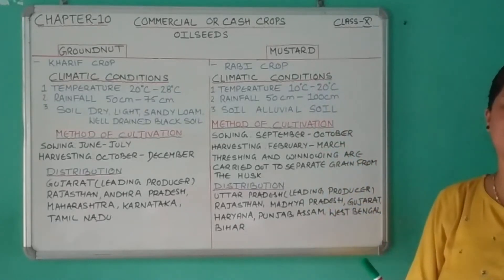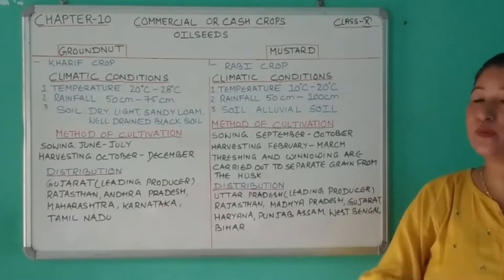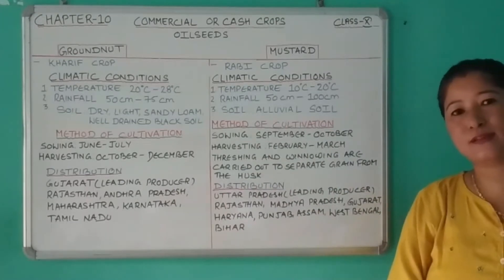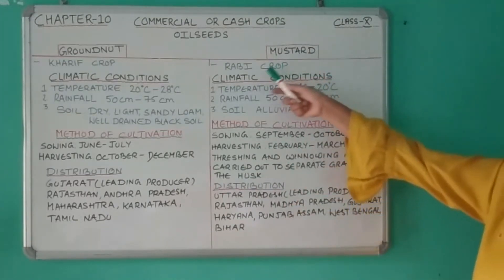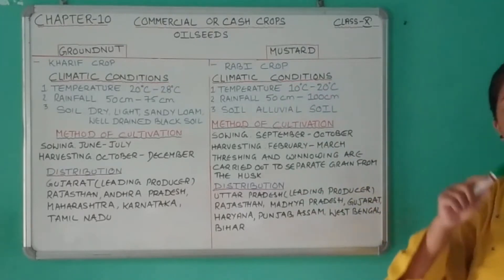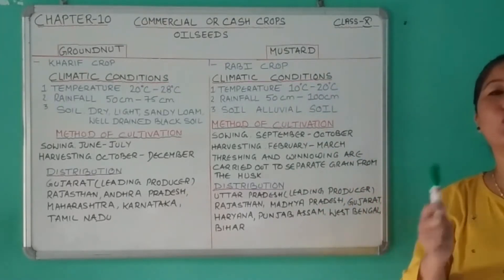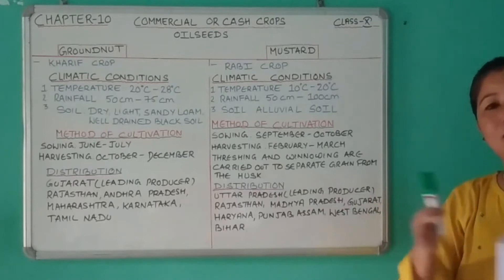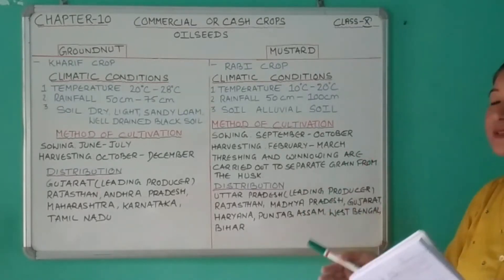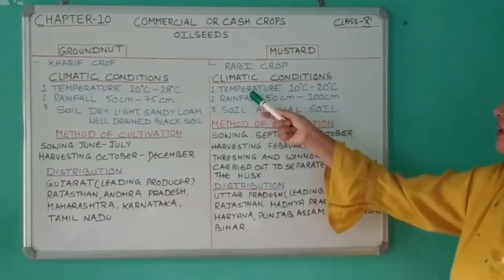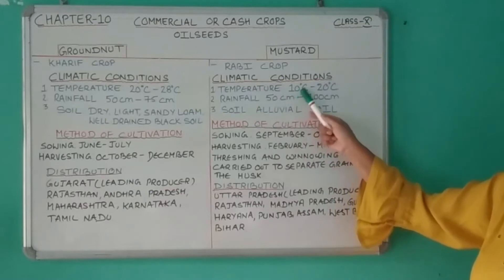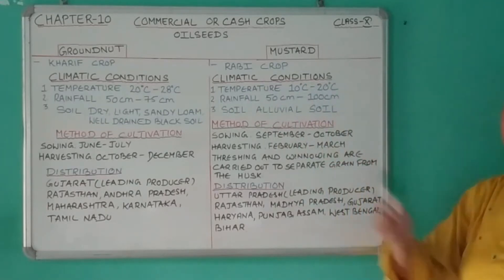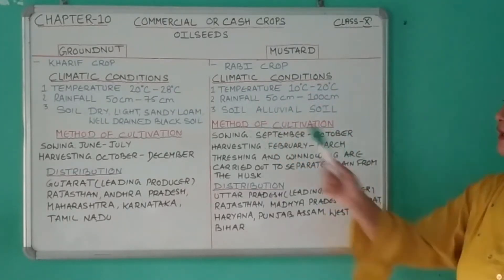The second important oil seed crop is mustard, which is an edible oil. We have two categories: edible and inedible. Under edible we have mustard, groundnut, and sesame; under inedible we have castor and linseed. Mustard is raised as a rabi crop, meaning it is sown during the winter season along with the food crop wheat, so the climatic requirement of mustard and wheat is somewhat the same. Temperature: 10°C to 20°C, rainfall: 50 cm to 100 cm, and soil: alluvial soil.